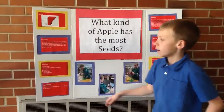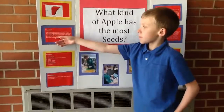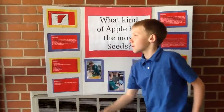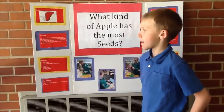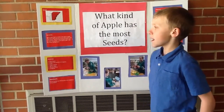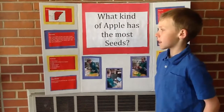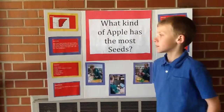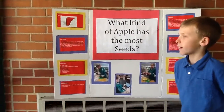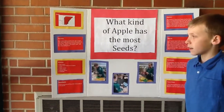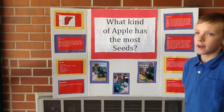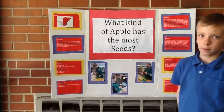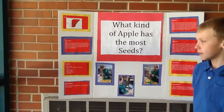My variables: the independent variable is the type of apple. The dependent variable is how many seeds are in the apple. The constant variable is the type of knife I'll use to cut and the cutting board that I'm using.